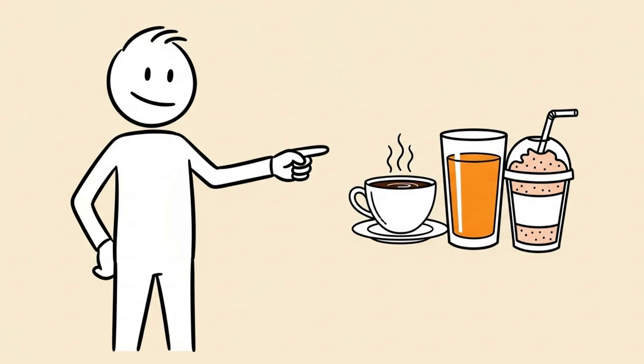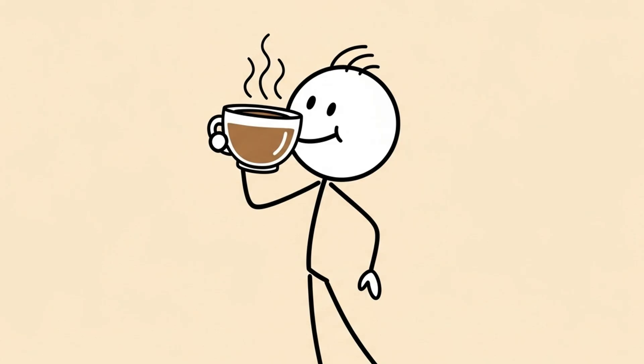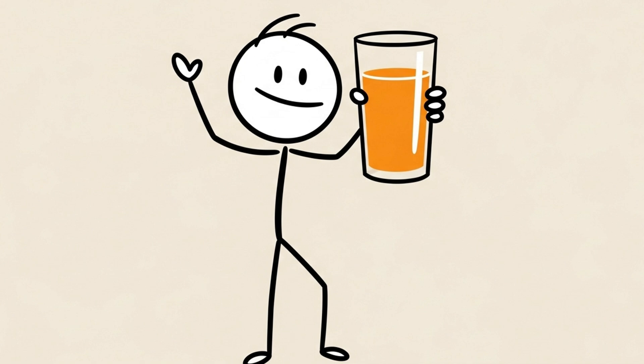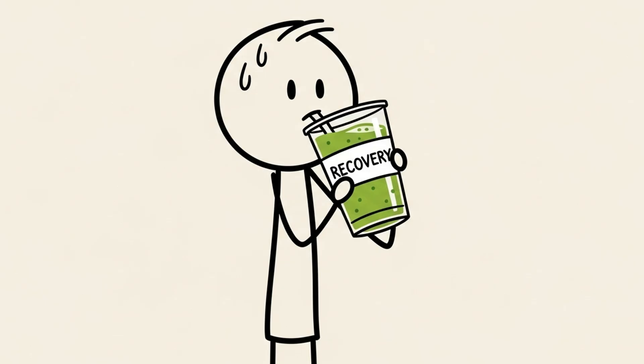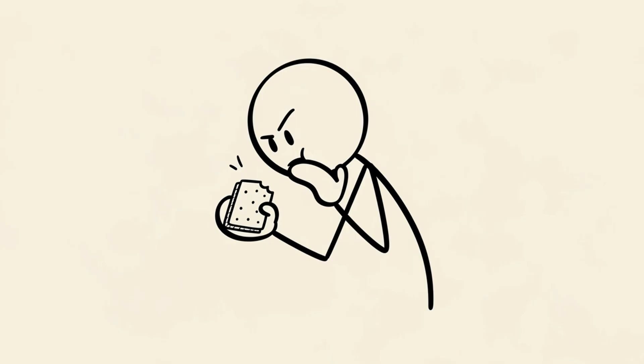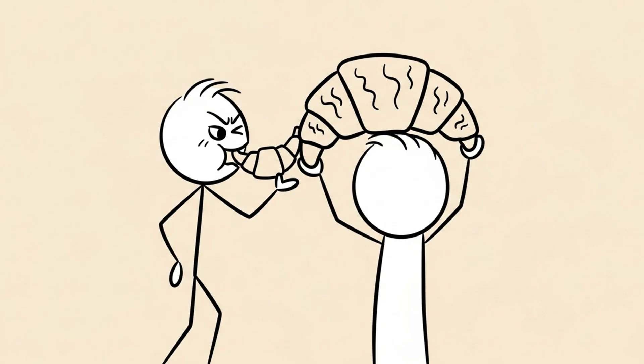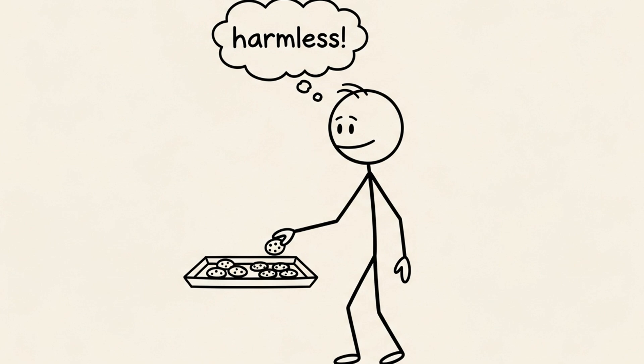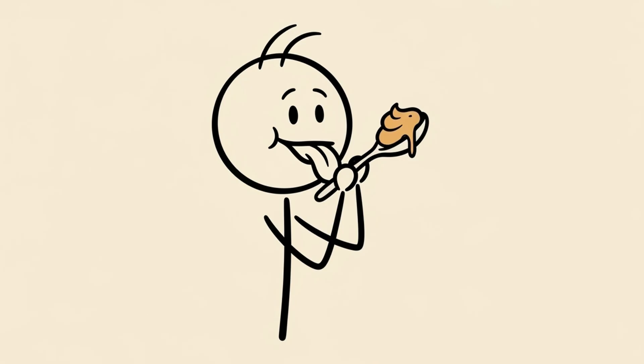3. Liquid calories. Your morning latte with whole milk and sugar. That fresh orange juice. That recovery smoothie. These can easily pack 200, 400 calories that we drink without even thinking about. 4. The bites, licks, and tastes. The bite of your partner's croissant. The harmless cookie at the office. The peanut butter left on the spoon.